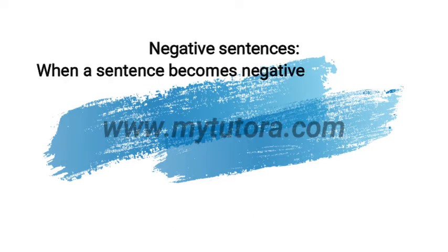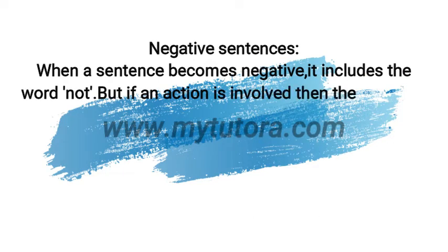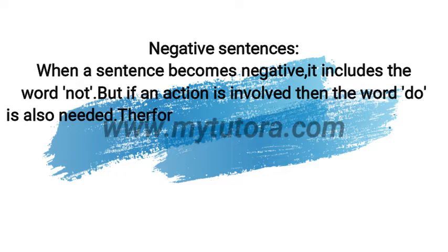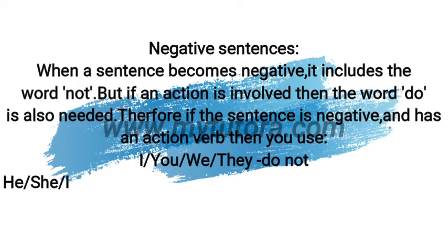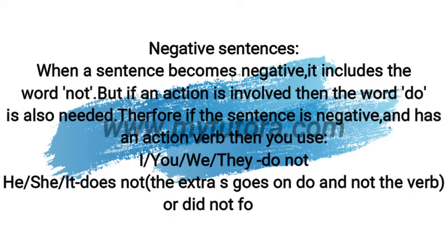Now have a look at negative sentences. When a sentence becomes negative, it includes the word not. But if an action is involved, then the word do is also needed. Therefore, if the sentence is negative and has an action verb, then for I, you, we, they, we use do not.